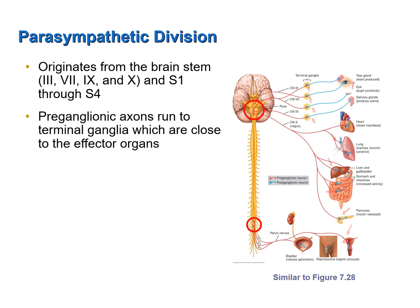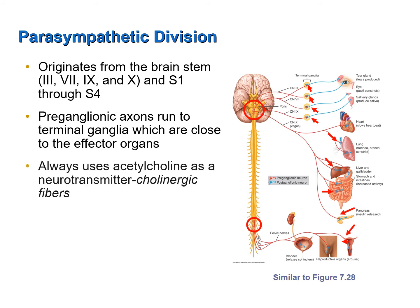The preganglionic fibers of the parasympathetic division are quite long and synapse with postganglionic neurons in terminal ganglia, which are located very close to — or actually on — the effector organs. Acetylcholine is the exclusive neurotransmitter of the parasympathetic division, so all preganglionic and postganglionic nerve fibers are cholinergic.